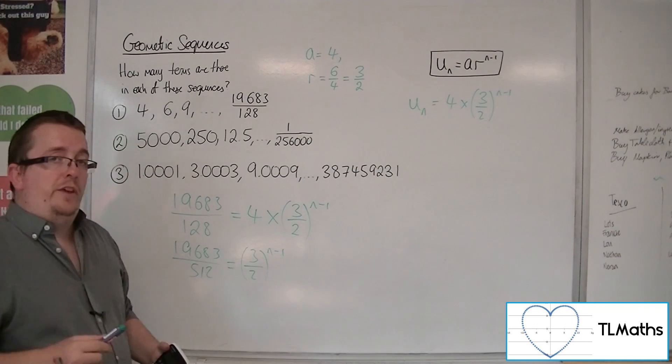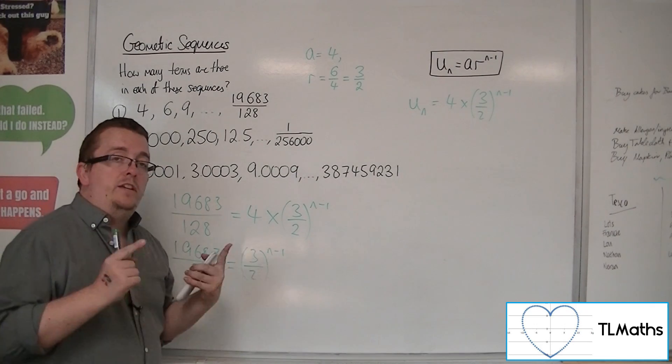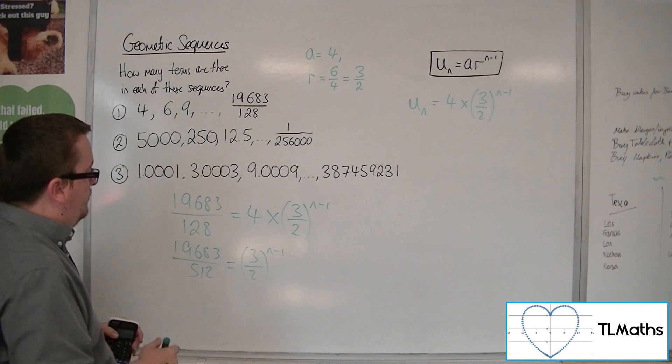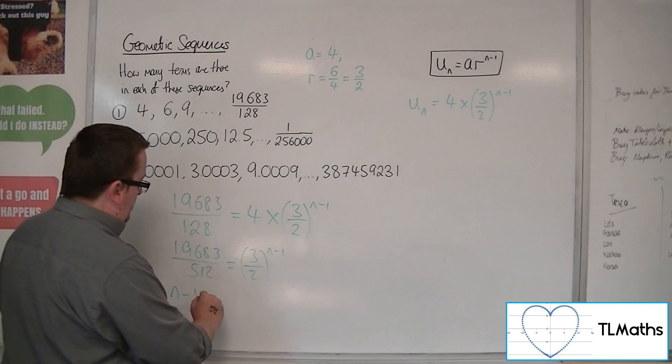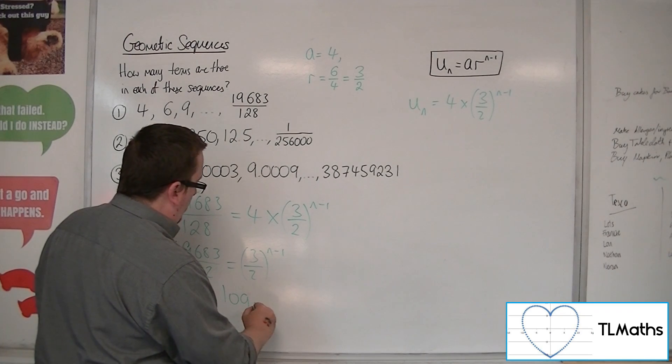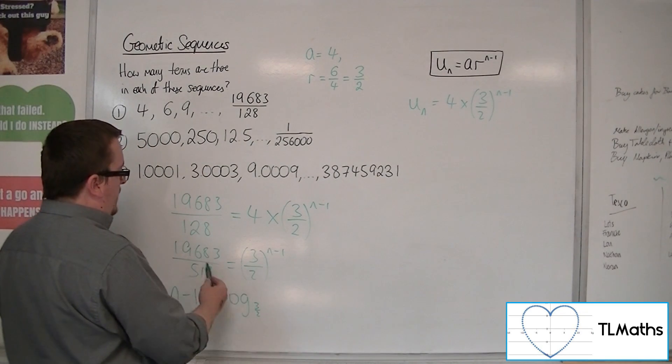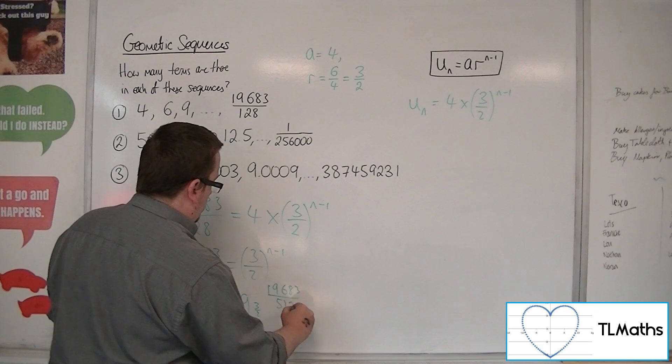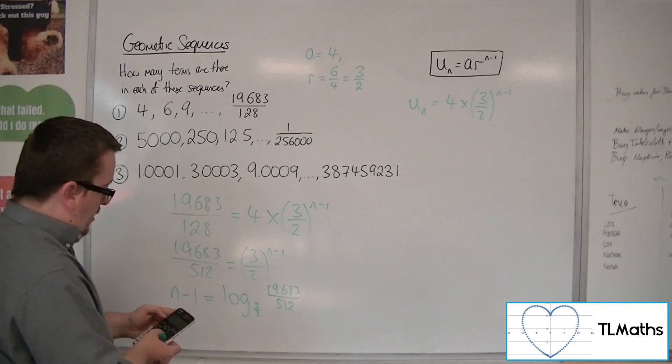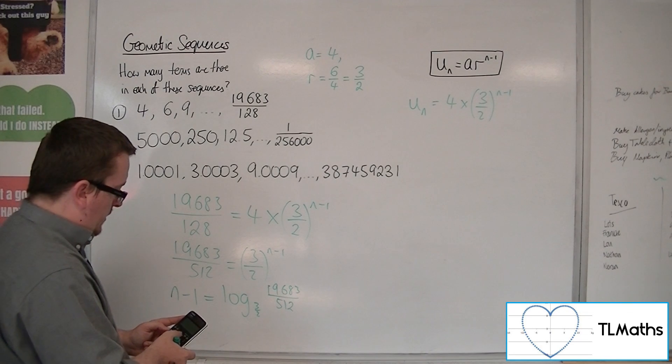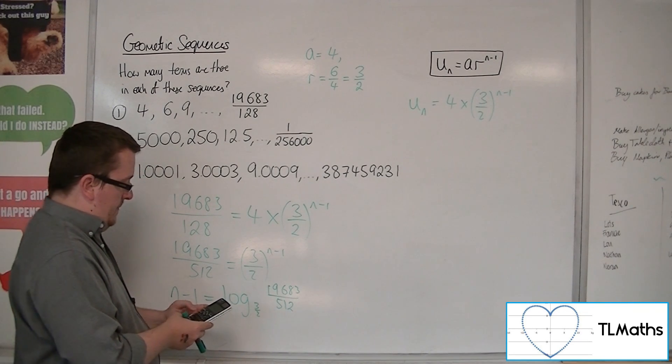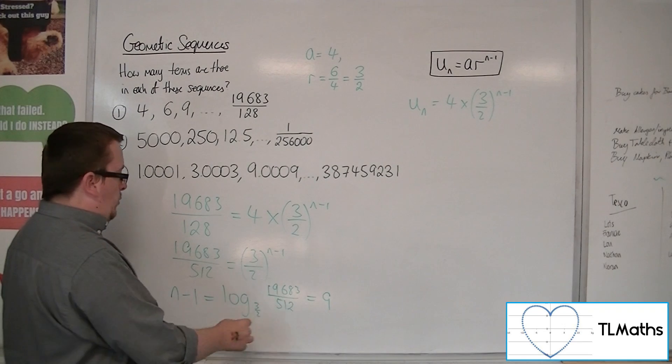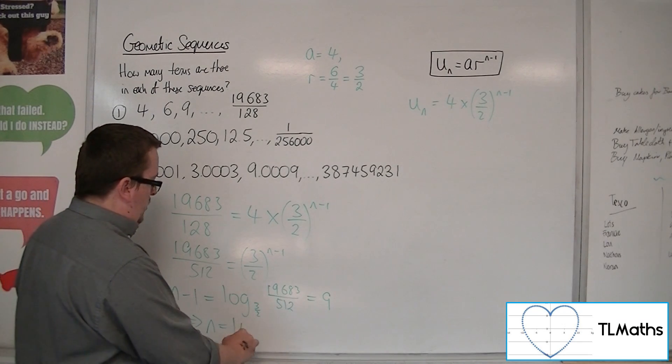Now, in order to solve this equation, it would probably be easier using logarithms. So going from an exponential equation to a logarithmic equation, so that n minus 1 is log base 3 halves, that's your base value, of 19683 over 512. So log base 3 halves of 19683 over 512, and that's 9. So if n minus 1 equals 9, n must be equal to 10.